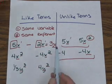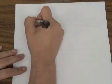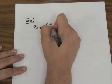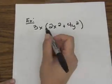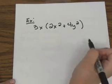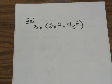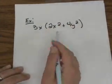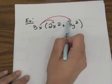Let's do some other examples where you have to decide when you are and aren't allowed to combine terms. Here we have a monomial, one term, being multiplied by a binomial, two terms. In this case, you're going to distribute the monomial 3x to both terms inside the parentheses. So we're going to multiply 3x by 2x squared, and then multiply 3x by 4y squared.